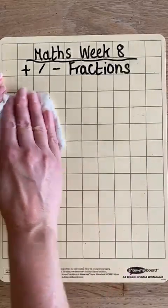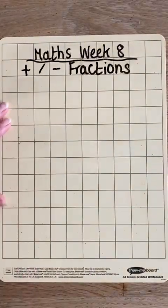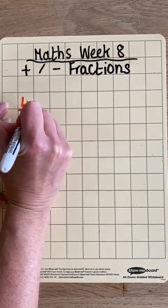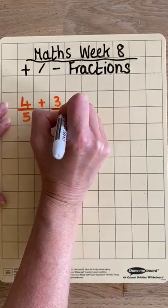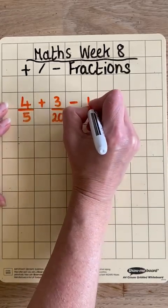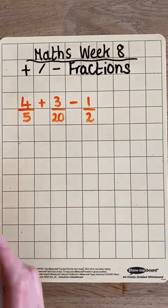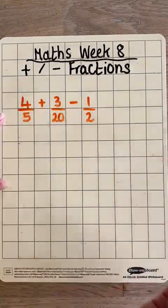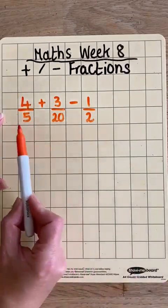Let's get rid of this one. Our sum in the example is solve 4 fifths add 3 twentieths and take away a half. As you can see, all the denominators are different, so we can't just add and subtract the numerators. The problem is that the denominators are different.